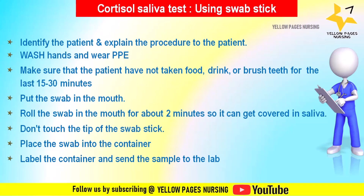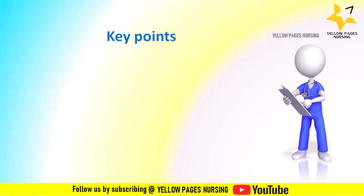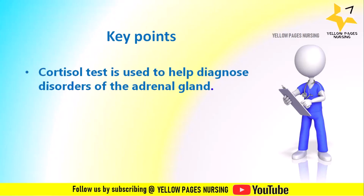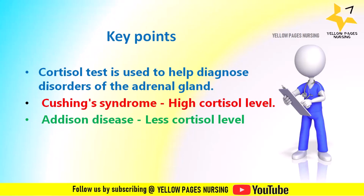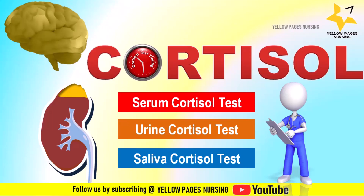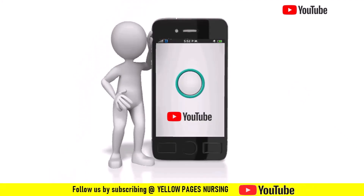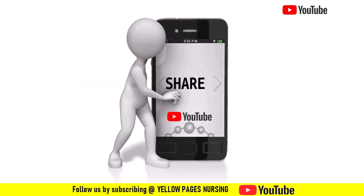So far we have discussed cortisol — how it is produced, its main functions, how cortisol levels are diagnosed in blood, saliva, and urine, and why the cortisol test is indicated. Key points include: the cortisol test is used to help diagnose disorders of the adrenal gland, such as Cushing's syndrome (high cortisol level) and Addison's disease (low cortisol level). If you found this video useful, please like it, share it, subscribe, and hit the bell icon to receive instant notifications. Thanks for watching and have a nice day.